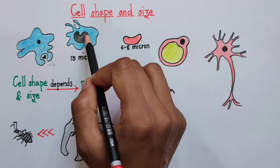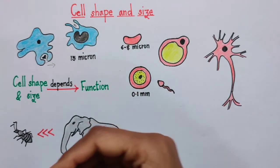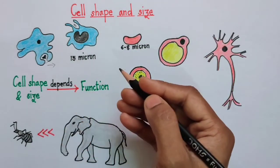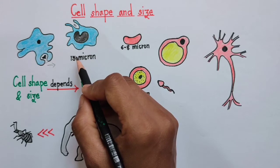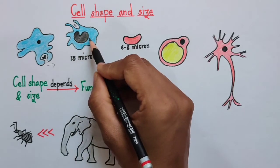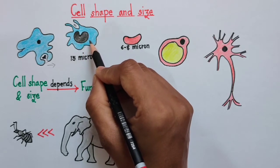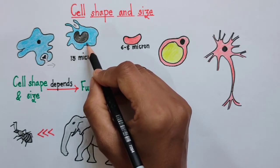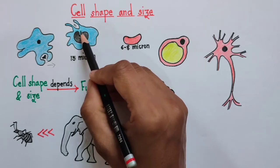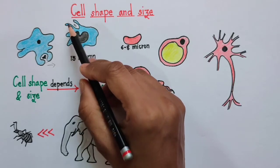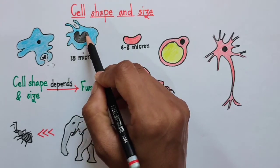As we know that WBCs, they are the soldiers of our body. So they keep circulating in our body and they search for the pathogens. They move along with the blood and at the same time they move out of the blood into the surrounding tissue fluid looking for the pathogen. This ability of changing the shape by forming false foot or pseudopodia allows them to move from one place to another.